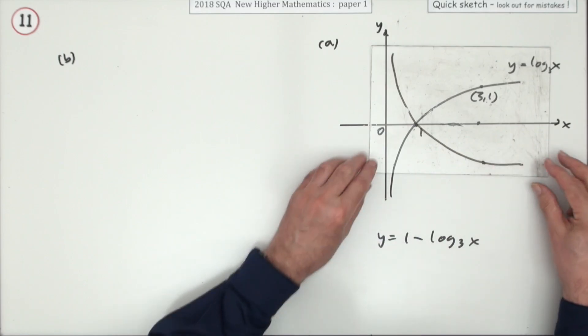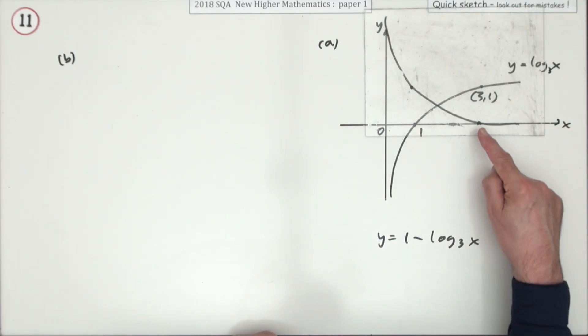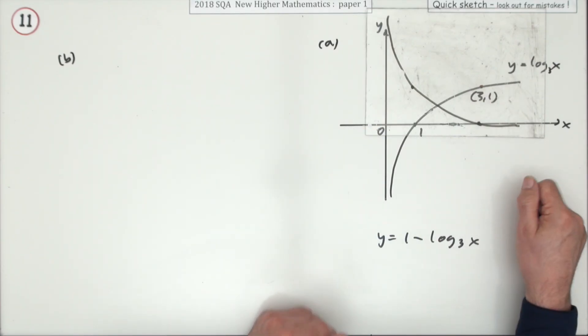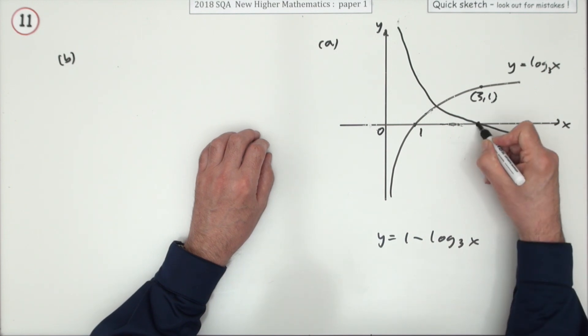So it lifts up 1 to here, it's going to be crossing—of course that shouldn't touch the y-axis—it's going to be crossing the x-axis just below the 3, so something like that for instance, where that's the new point there, that's now (3,0).